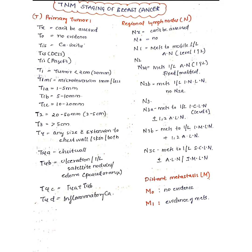To summarize T staging: TX cannot be assessed; T0 has no evidence; Tis is carcinoma in situ; T1 is less than 2 cm; T2 is 2 to 5 cm; T3 is more than 5 cm; T4 is any size involving chest wall, skin, or both, or inflammatory carcinoma.